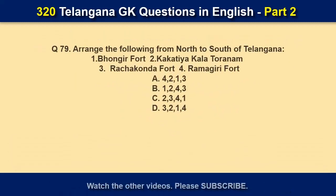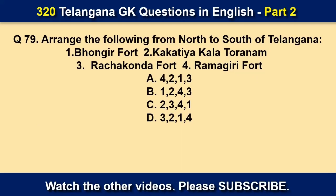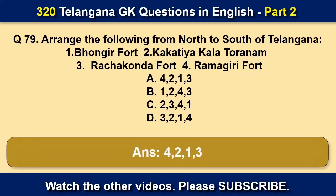Arrange the following from north to south of Telangana: 1. Bhongir Fort, 2. Kakatya Kalak Toranam, 3. Rachakonda Fort, 4. Ramagiri Fort. The answer is 4, 2, 1, 3.